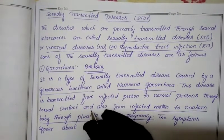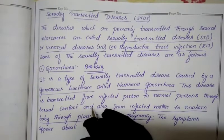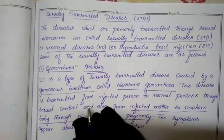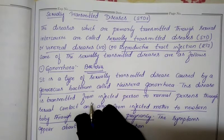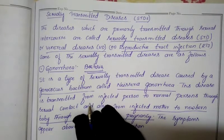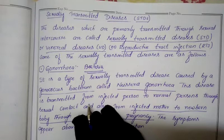Assalamu alaikum warahmatullahi wabarakatuhu. In our previous class we discussed the different types of contraceptive devices: the natural method, the mechanical method, the chemical method, and the permanent method. In the permanent method, the person permanently doesn't want children.